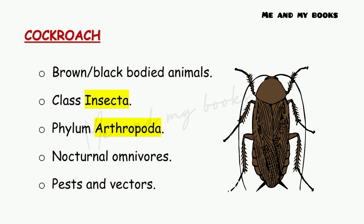Cockroaches are nocturnal omnivores. Nocturnal means they are active at night. As omnivores, they feed on a variety of food from both plants and animals. They are also pests and vectors because they transmit many diseases, carrying pathogens as disease-causing organisms.